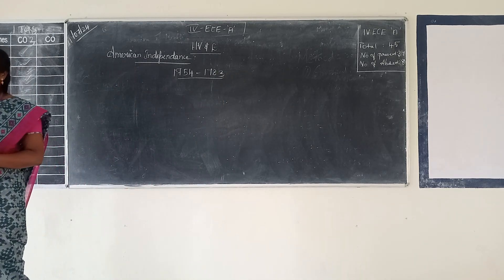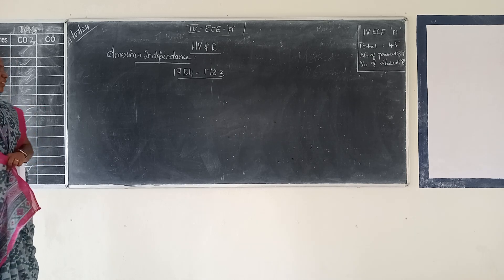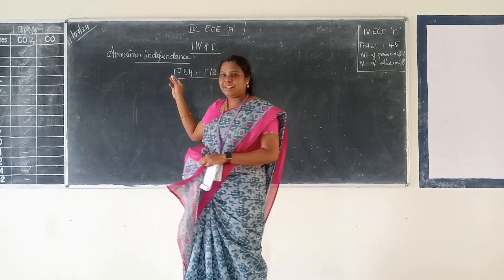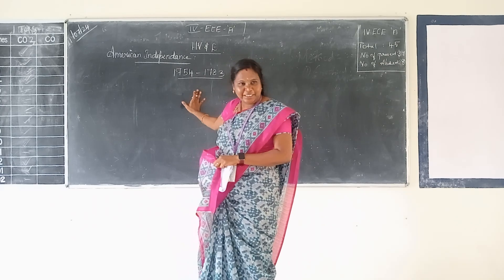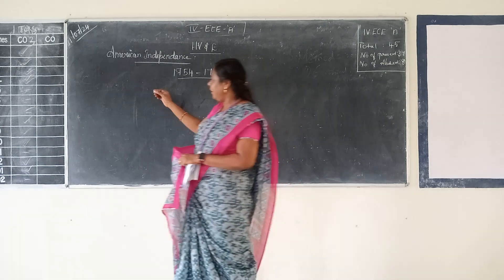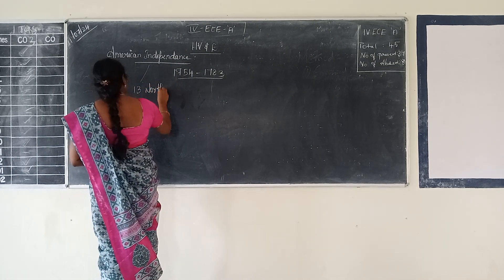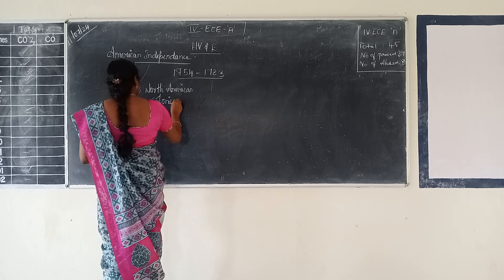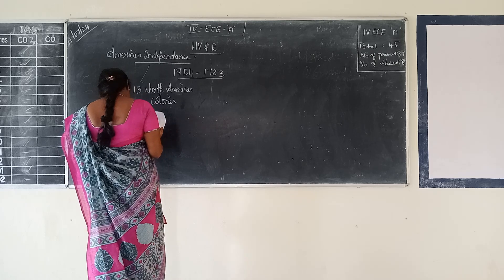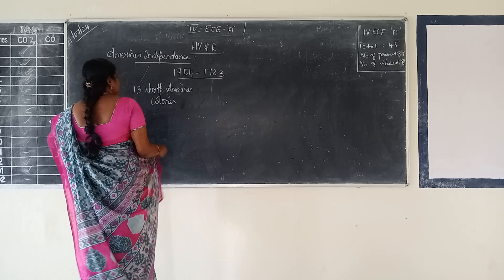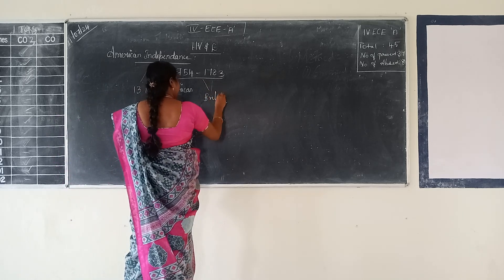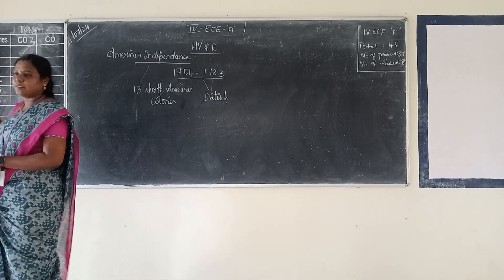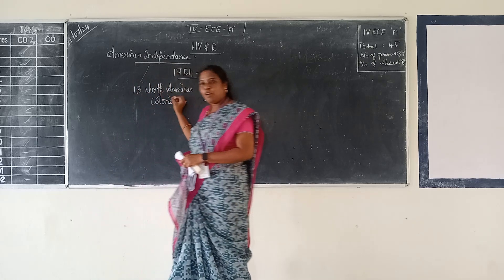The American Revolution, also called the American Independence War, was held between 1754 to 1783. It was actually a war between the American colony people and the British people. There were 13 North American colonies involved, and it was a war between those 13 North American colonies and the British.